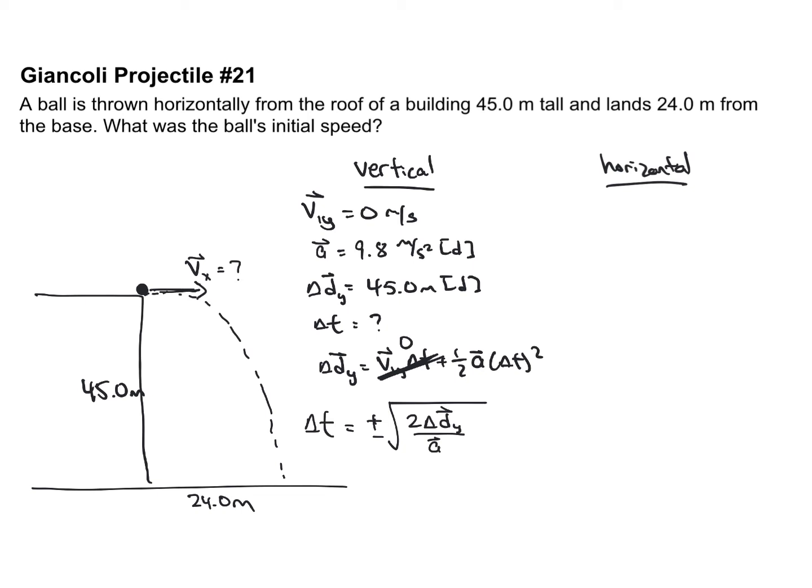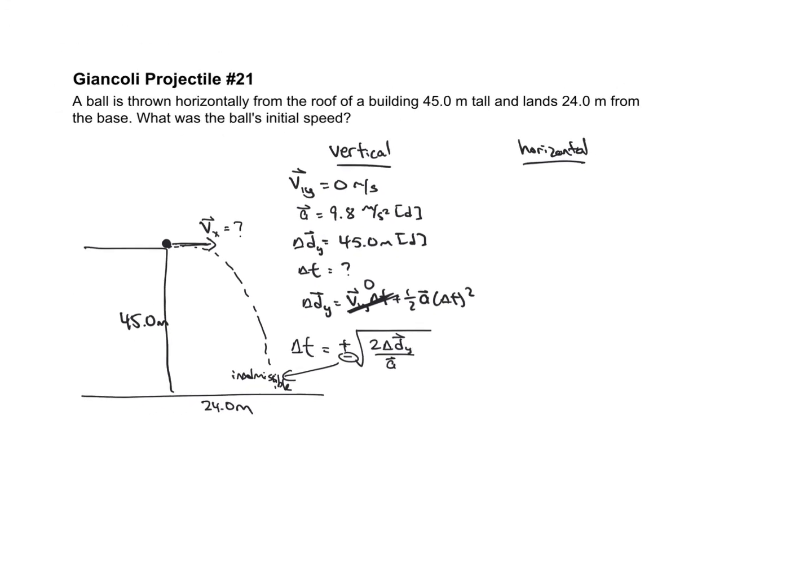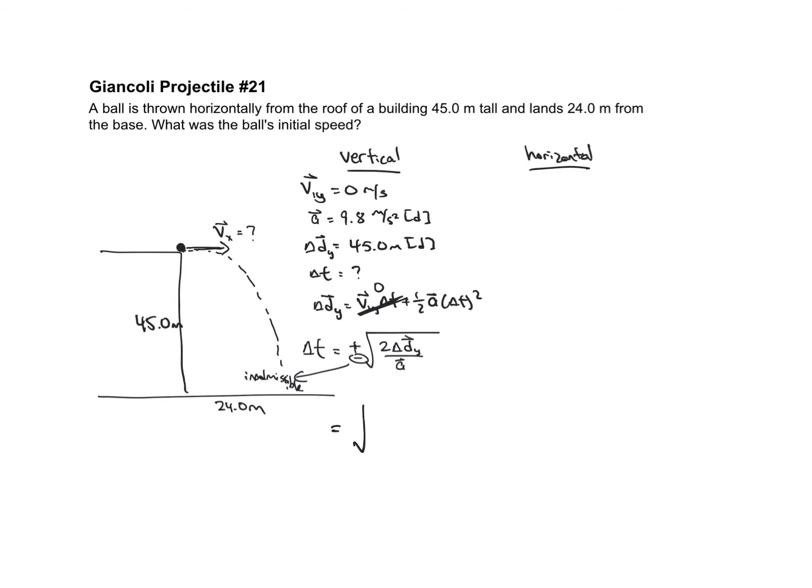I'm not going to show all the algebra steps. That's what you get when you rearrange the equation for time. The negative is going to be inadmissible because a negative time does not make physical sense. So it's just going to be the positive square root of two times 45.0 divided by 9.8.